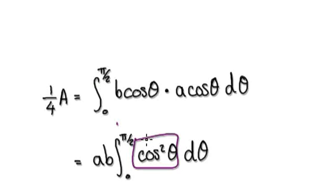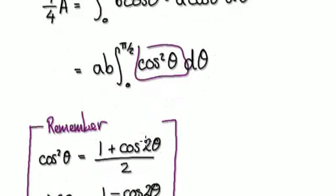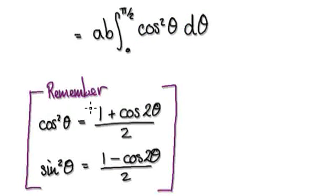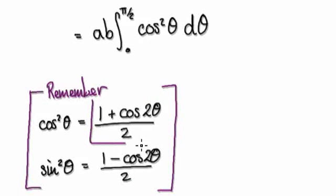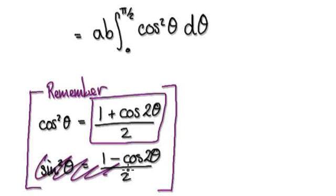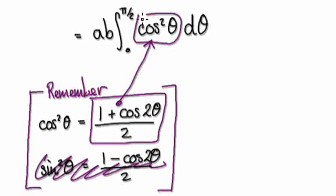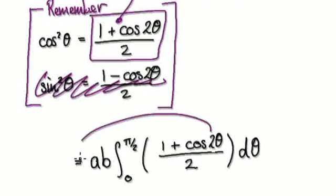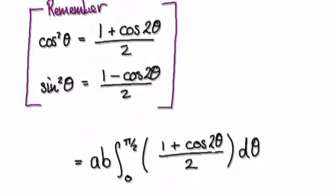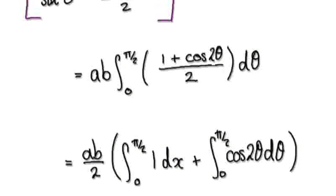Whenever you want to integrate cos squared or sine squared, you should think about the double angle identity. We've seen this many times. So now use this identity — we don't need the sine squared version for this video. Put this into the integral, so this whole thing will become ab over 2 times the integral of one plus cos 2 theta. Factor out the half — that will then give you ab over 2 times the bracket one plus cos 2 theta.